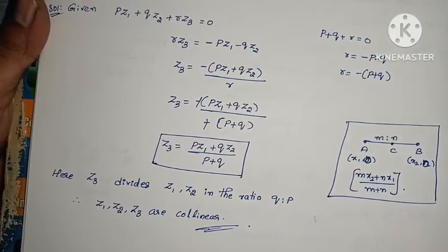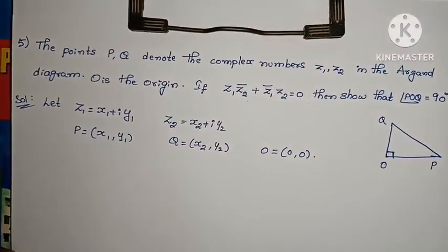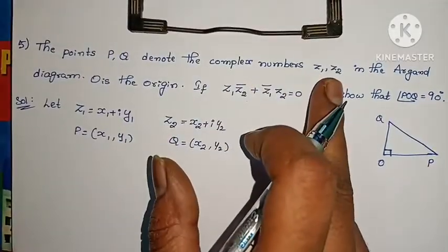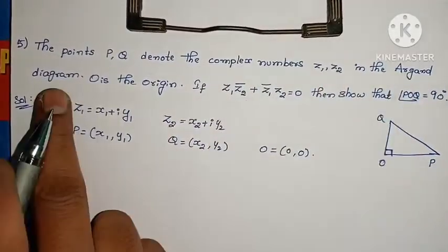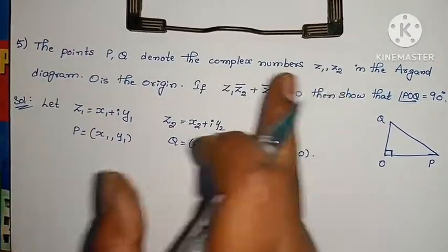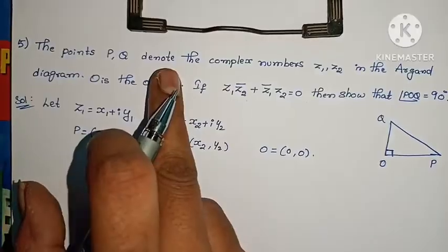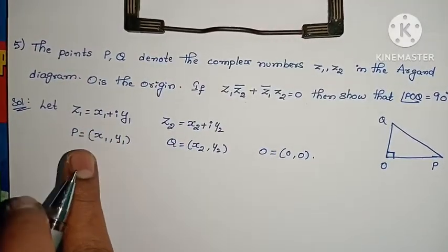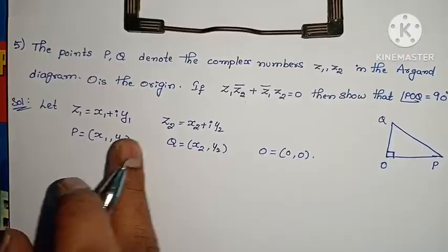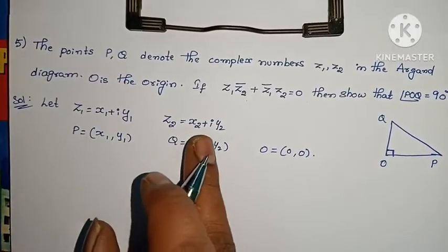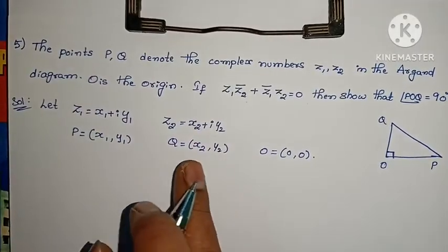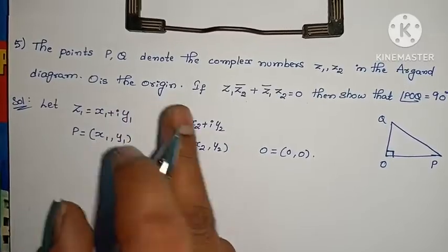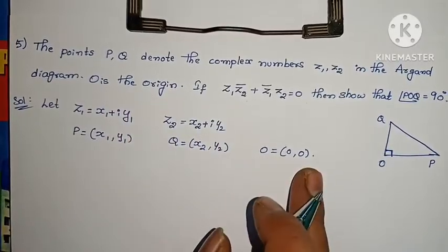Next question: the points P and Q denote the complex numbers Z1 and Z2 in the Argand diagram. If Z1 = x1 + iy1, then P is the point (x1, y1). If Z2 = x2 + iy2, then Q is the point (x2, y2). O is the origin, at (0, 0).